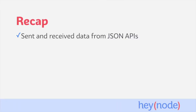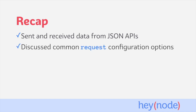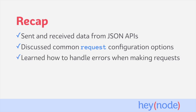To recap, in this tutorial we learned how to send and receive data from JSON APIs using Request Promise. We discussed how to configure the requests that you send and the common options that you'll use. And we also learned how to handle the different errors that you could receive when making requests with Request Promise.